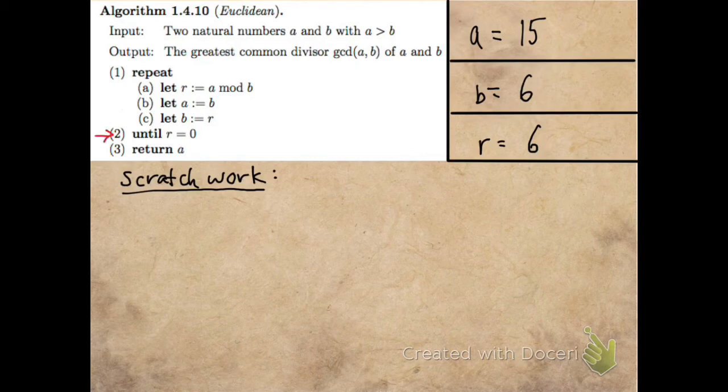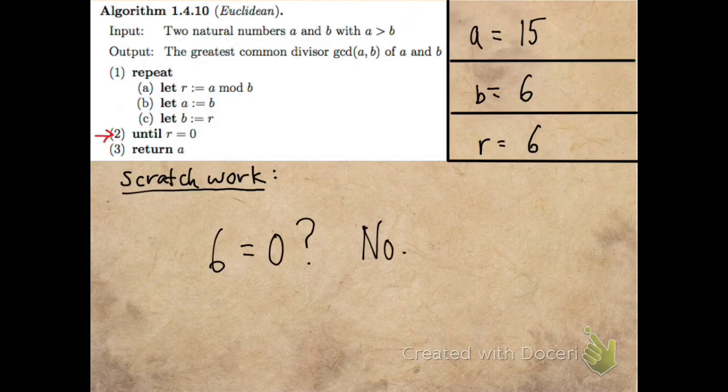And then I check, is R equal to 0? 3 is not 0. And so I move back up to the top of the repeat loop.